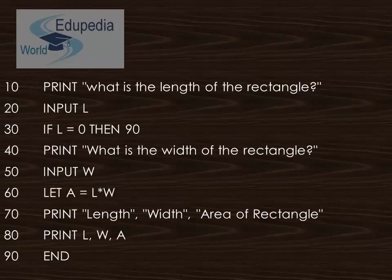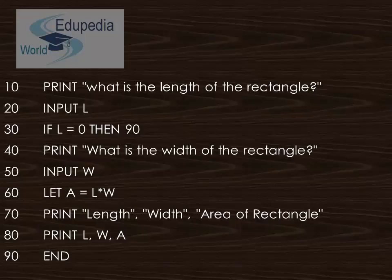To write the program, first we print a prompt asking for the length of the rectangle, then take input and assign it to L. We include a condition: if L equals 0, then go to line 90, meaning the program ends when zero is entered. Next, we prompt for the width of the rectangle and take that input as W.